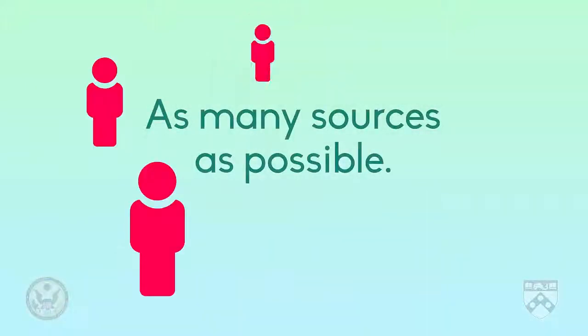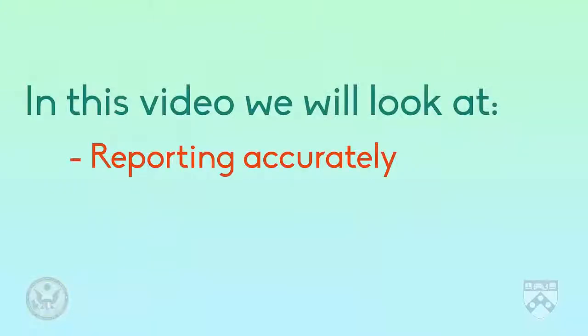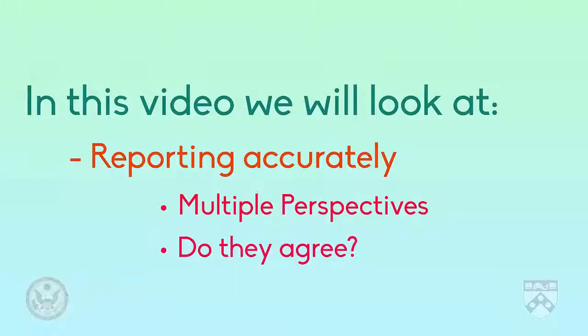Hello. Perhaps you remember back in unit one, one of the principles of journalism that we looked at was completeness. This means that a journalist needs to tell the whole story by speaking to as many sources as possible. In this video, we will look at reporting more accurately by gathering multiple perspectives and seeing if they agree.